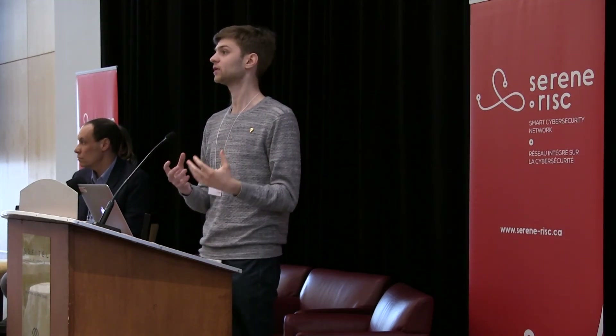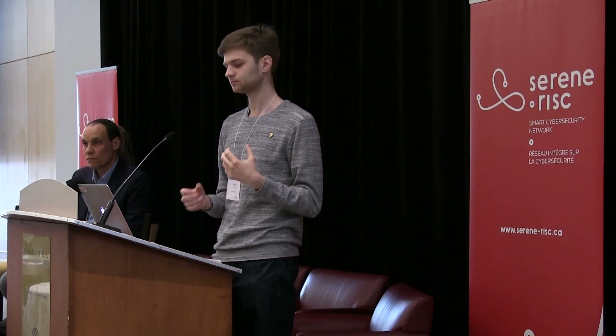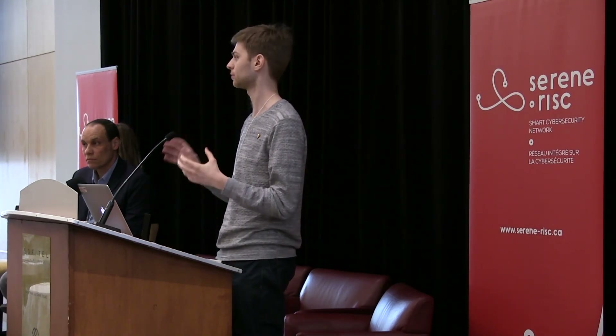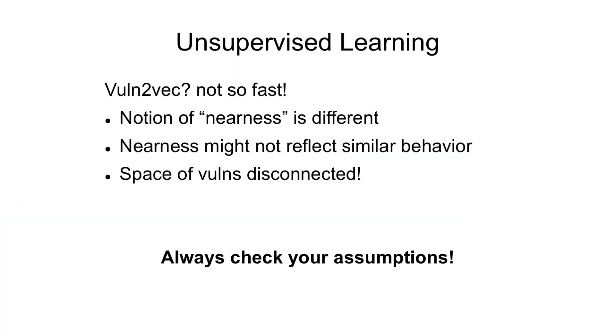Unsupervised learning shows a lot of promise, but it's not trivial to implement. You have to understand your assumptions. Could we just take our vulnerabilities and run this same algorithm on them and get something meaningful? Not really, because the vulnerabilities we look at have quite a different structure — the notion of nearness and similarity is different. There might be clusters of different types of vulnerabilities, but they only appear on specific assets and don't interact with one another, so they never appear in each other's neighborhood. There are various pitfalls in applying a general strategy, and the takeaway message is: check your assumptions about your data, apply your expertise to understand the critical structure of the data, and then even basic machine learning algorithms can work well.